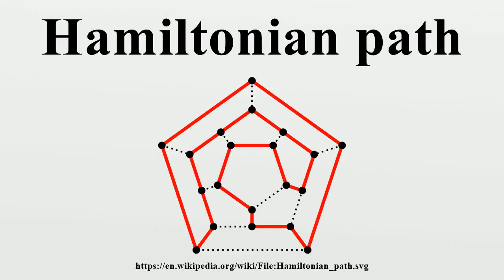In the mathematical field of graph theory, a Hamiltonian path is a path in an undirected or directed graph that visits each vertex exactly once. A Hamiltonian cycle is a Hamiltonian path that is a cycle. Determining whether such paths and cycles exist in graphs is the Hamiltonian path problem, which is NP-complete.